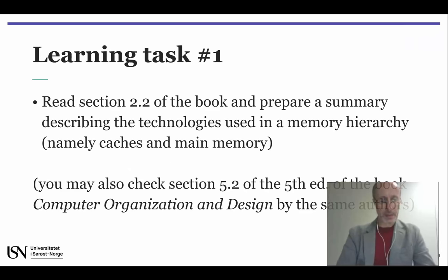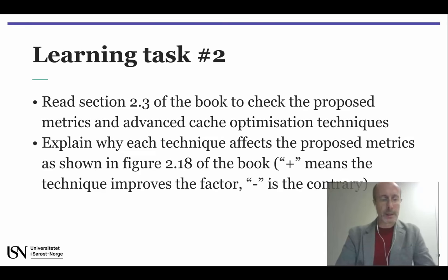And now for the learning tasks. Memory technology is an important issue in designing cache systems, so here is proposed learning task number one: go through section 2.2 of the book and prepare a summary describing the technologies used in a memory hierarchy. And if you feel like learning more about cache optimization techniques, you might read section 2.3 and then try to fill in the table shown in figure 2.18 by yourself, showing how each of those ten advanced techniques affects the various metrics considered.